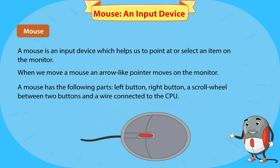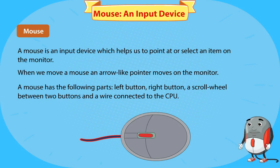A mouse has the following parts: left button, right button, a scroll wheel between the two buttons, and a wire connected to the CPU.